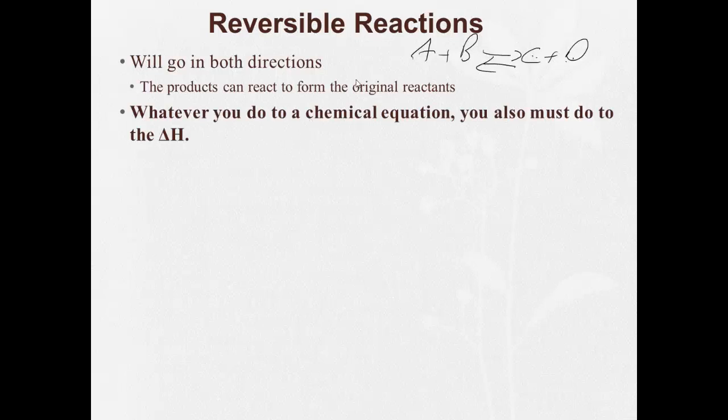Whatever you do to a chemical equation, you must also do to the delta H. So that means if we reverse a reaction, so let's say A plus B yields C plus D plus some heat, I'm just going to put J for joules, heat.